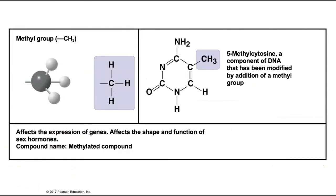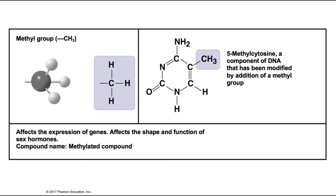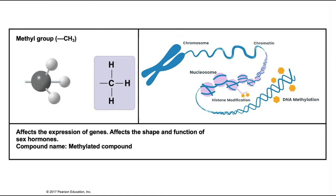Group number seven: the methyl group. Methyl groups are comprised of a central carbon with three hydrogens attached — fairly small functional groups found on many organic molecules. The example shown is 5-methylcytosine, a modified component of our DNA. Methyl groups have a very special function in gene expression: they can be added to or removed from a part of our DNA to activate or deactivate that part of the genome. We call this unique ability to regulate gene expression epigenetics, and these compounds are said to be methylated.